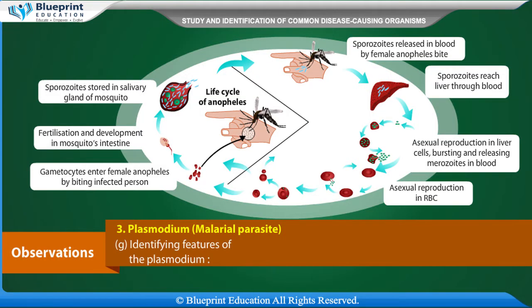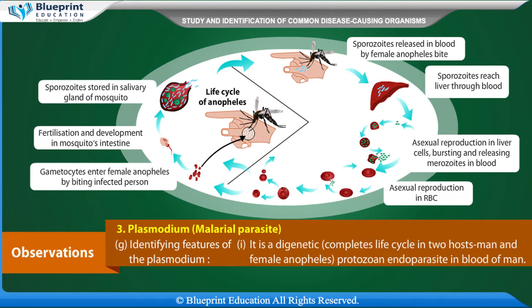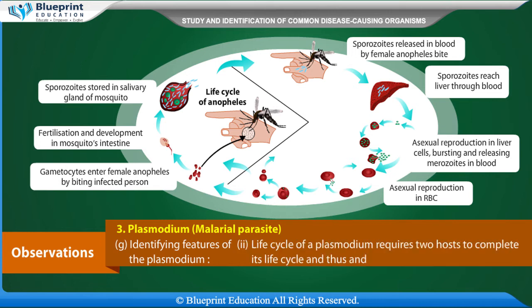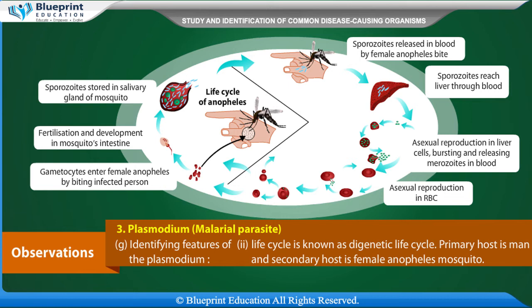Identifying features of Plasmodium: it is digenetic, completing its life cycle in two hosts — man and female Anopheles mosquito. It is a protozoan endoparasite found in the blood of man. The life cycle requires two hosts: the primary host is man and the secondary host is the female Anopheles mosquito.